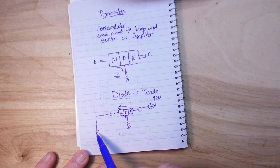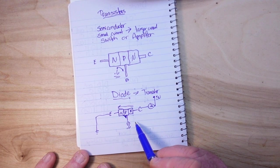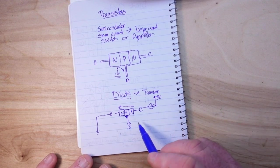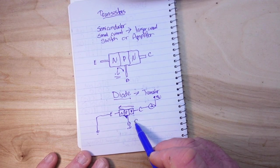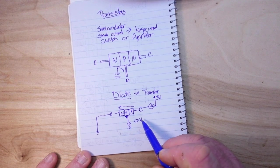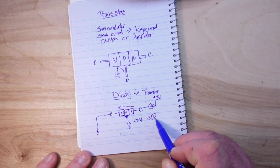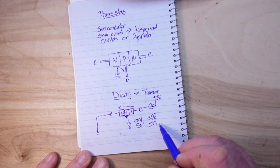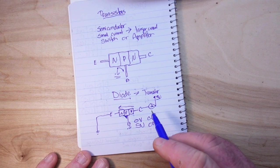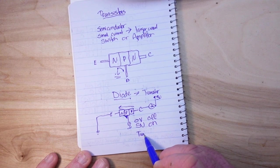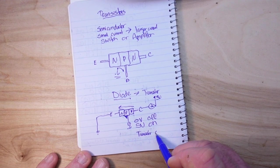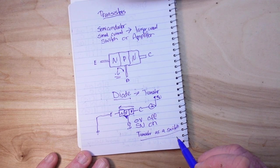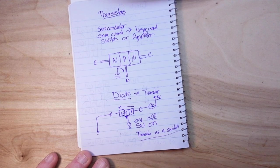And if we just have the base, okay say we're at 5 volts here, this is our 5 volt circuit. So if our base is at 0 volts, our bulb is off. If our base is at 5 volts, our bulb is on. And what we've created is the transistor as a switch, the simplest form. Let's take a look at that.